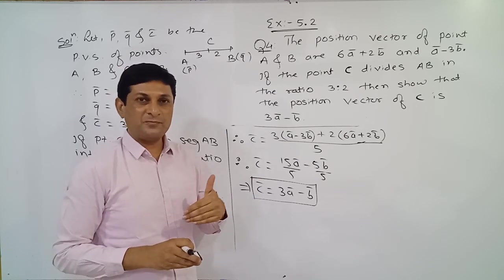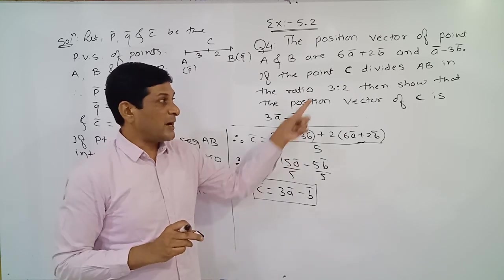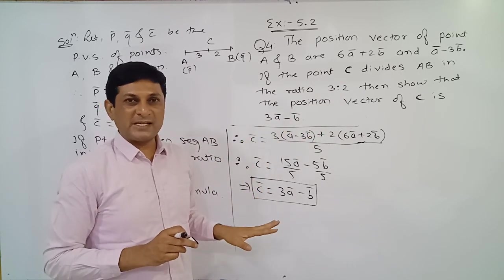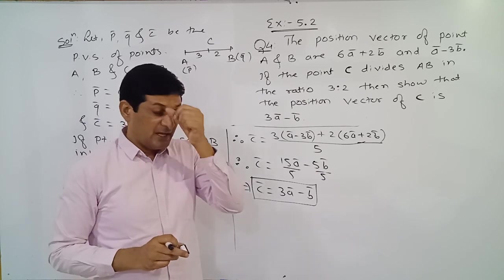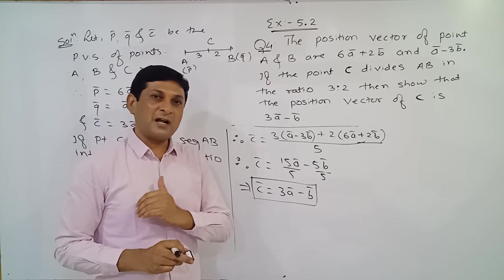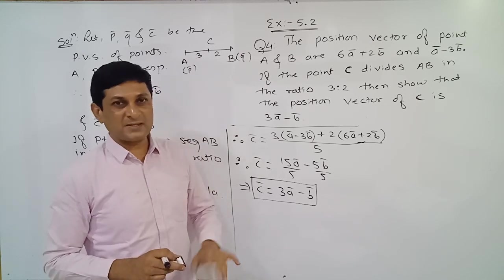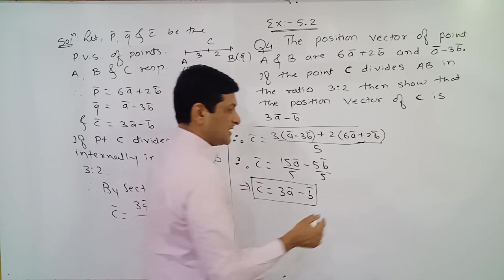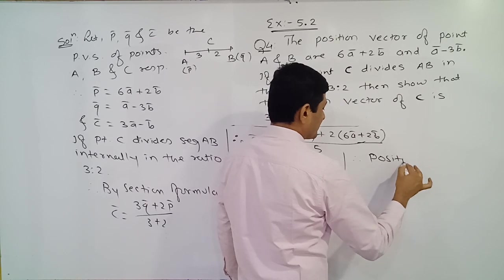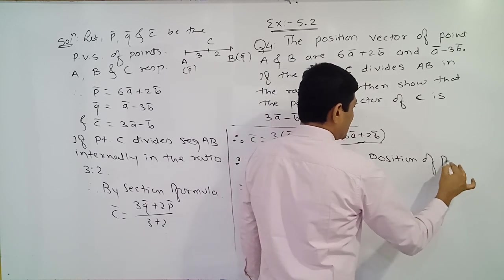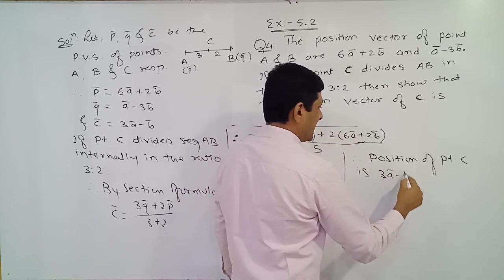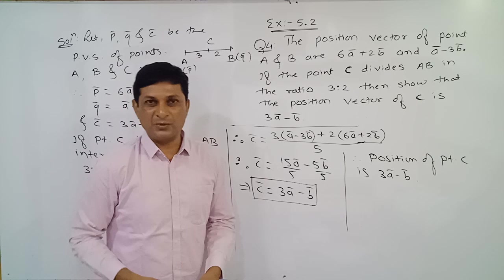It was not given whether point C divides internally or externally. We tried solving applying internal division and got the required result. If we had not obtained the required result, we would have tried external division. So therefore, position vector of point C is 3Ā minus B̄, which is the result we had to prove.